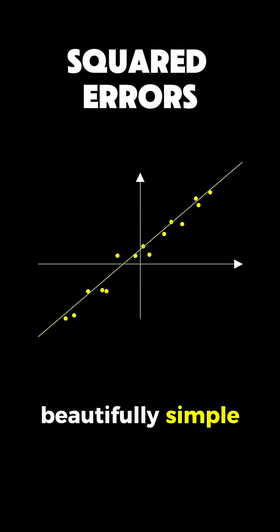The solution is beautifully simple. We square each error before adding them up, which makes all the errors positive and also has the nice property of punishing big errors more than small ones.